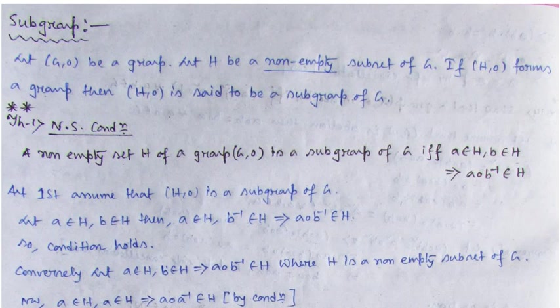Now the first important condition of subgroup — I want to tell you there is a theorem for this. The identity element that remains inside the group, that same identity element remains inside the subgroup as well, and it becomes the identity element of the subgroup too. This is a very important theorem: the identity element of the group is also the identity element of the subgroup.